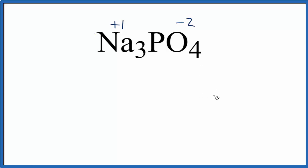Let's write an expression for this. We'll say everything's going to equal zero and we know we have three times plus one, that's three, plus we don't know what this phosphorus is so let's just call it X, and then we're going to add four times minus two, that's minus eight.